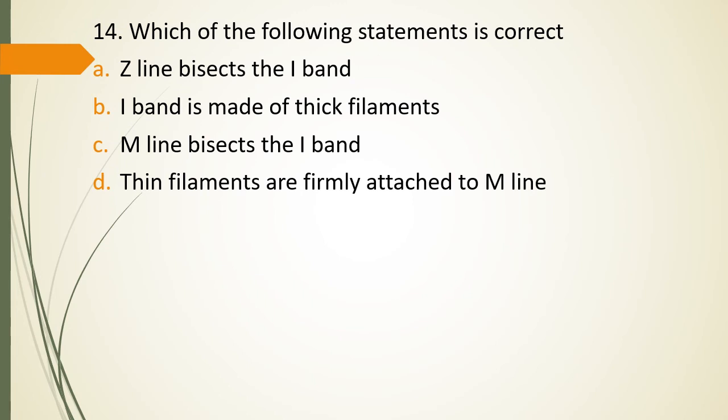Question 14. Which of the following statements is correct? Z line bisects the I band. I band is made of thick filaments. M line bisects the I band. Thin filaments are firmly attached to M line. Which of the following is correct? The correct answer is Option A. Z line bisects the I band.